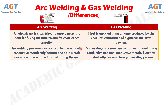Difference number 2. Arc welding processes are applicable to electrically conductive metals only, because the base metals are made an electrode for constituting the arc, whereas gas welding processes can be applied to both electrically conductive and non-conductive metals. Electrical conductivity has no role in the gas welding process.